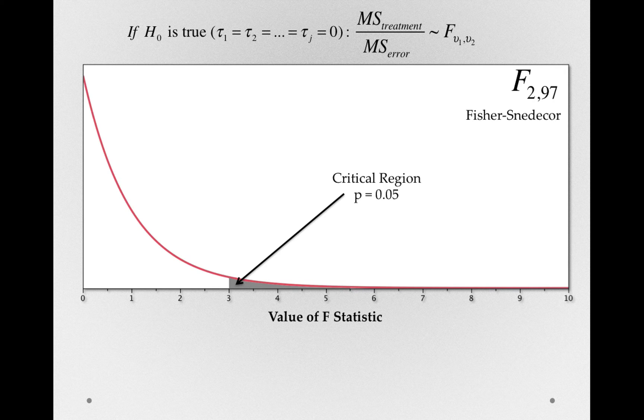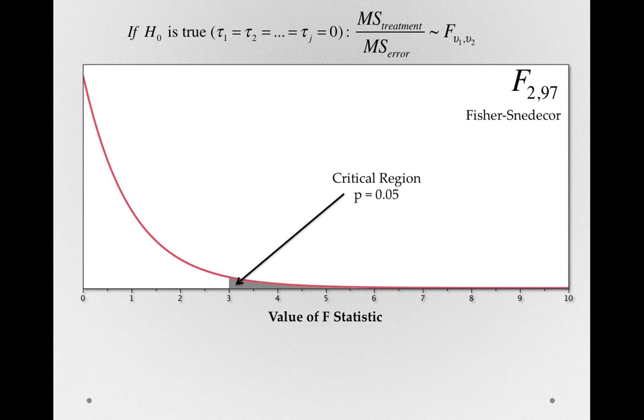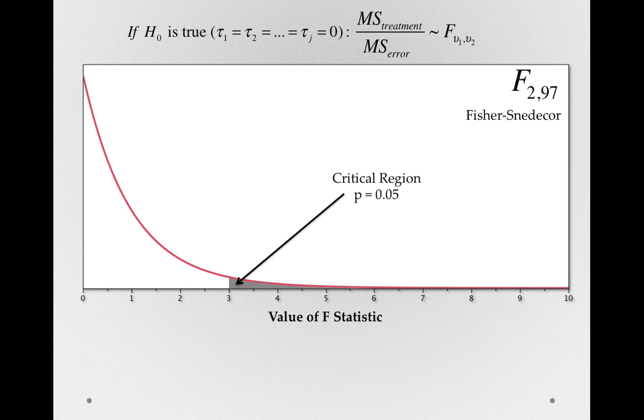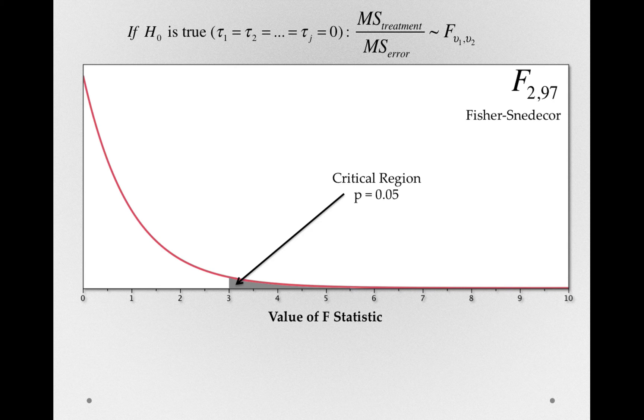That is, even before we did this study, as long as we knew how many groupings we have and how many individuals we'll be sampling, we know what types of values of F we're likely to get simply by chance alone. And given all the inferential logic we've developed in the past, we can test this hypothesis in the same way.